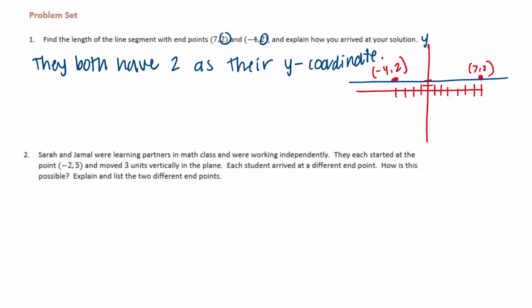There's a horizontal line going through the y-axis. Now we want to find the length of the line segment. What we need to do is find the absolute values of each x-coordinate, because they are the ones that are different. The absolute value of negative four is four, and the absolute value of seven is seven. Now since they are on opposite sides of zero — one's to the left, one's to the right — we're going to add them together. If they were on the same side, we would subtract them.